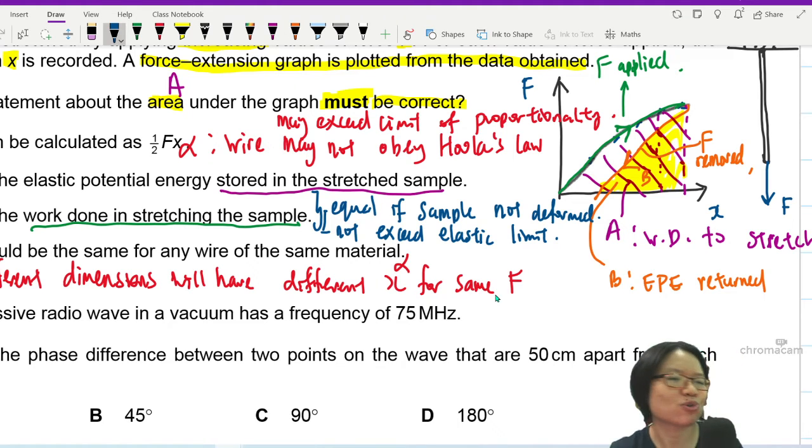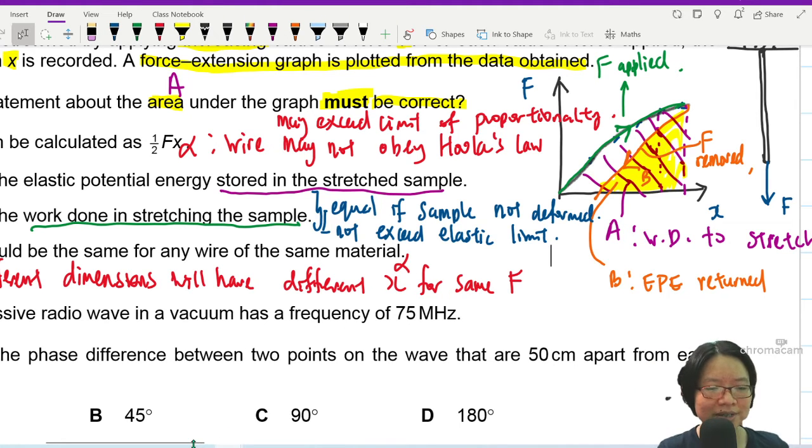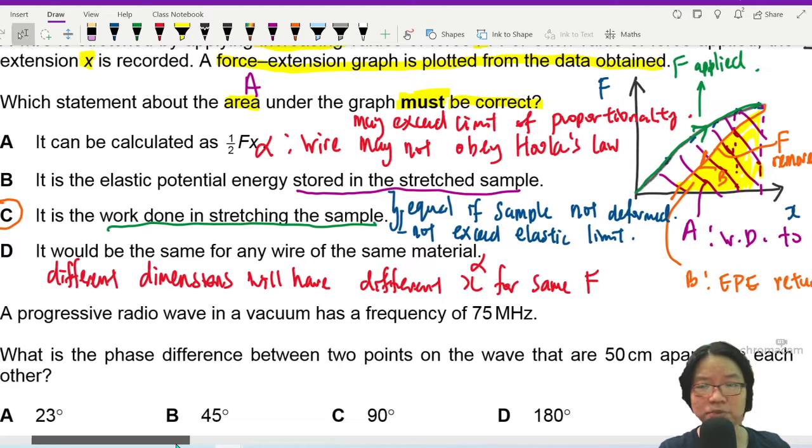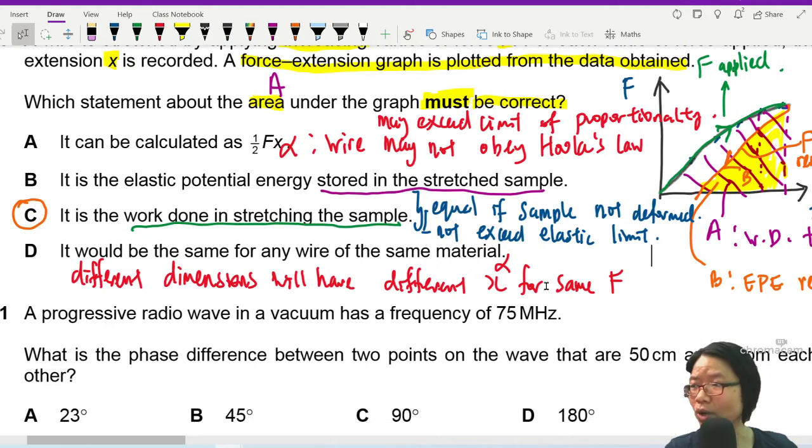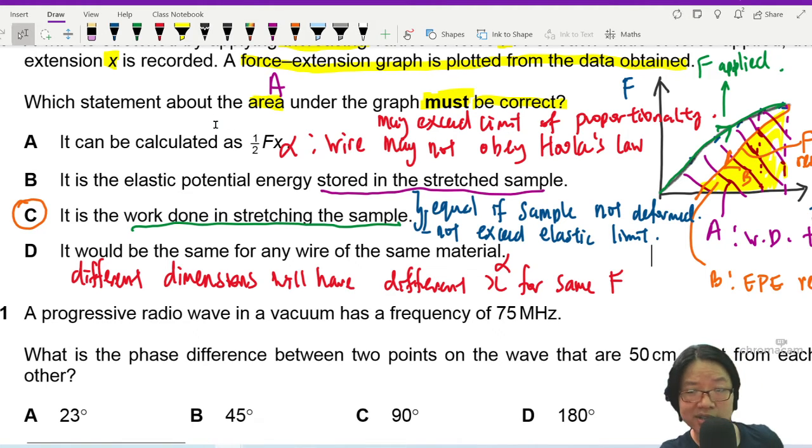You don't even know whether it follows Hooke's law. So it's too many unknowns now. So this is what I mean by statement questions can be very tricky, especially now when you have two. What does the area under this graph represent? So we cannot calculate it using half Fx because it may not even be a straight line. And D is pretty obviously wrong because the same material for F-x graph will not be the same. So the energy stored will not be the same. You will need more energy to stretch a thicker wire.